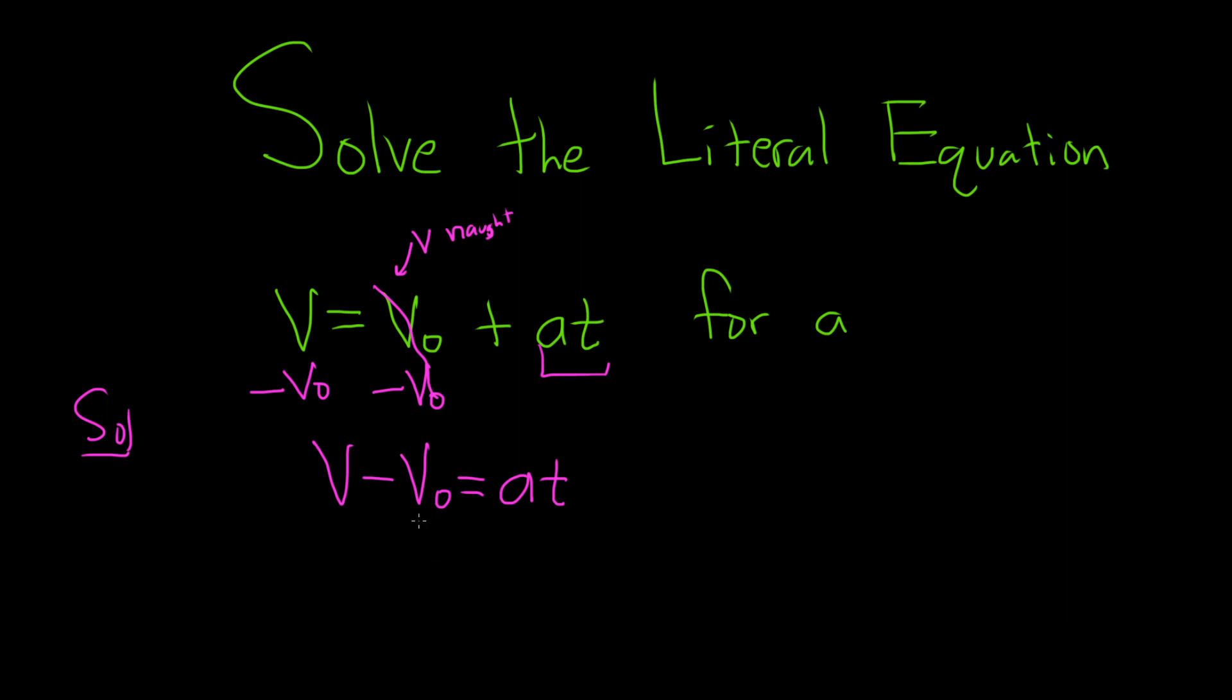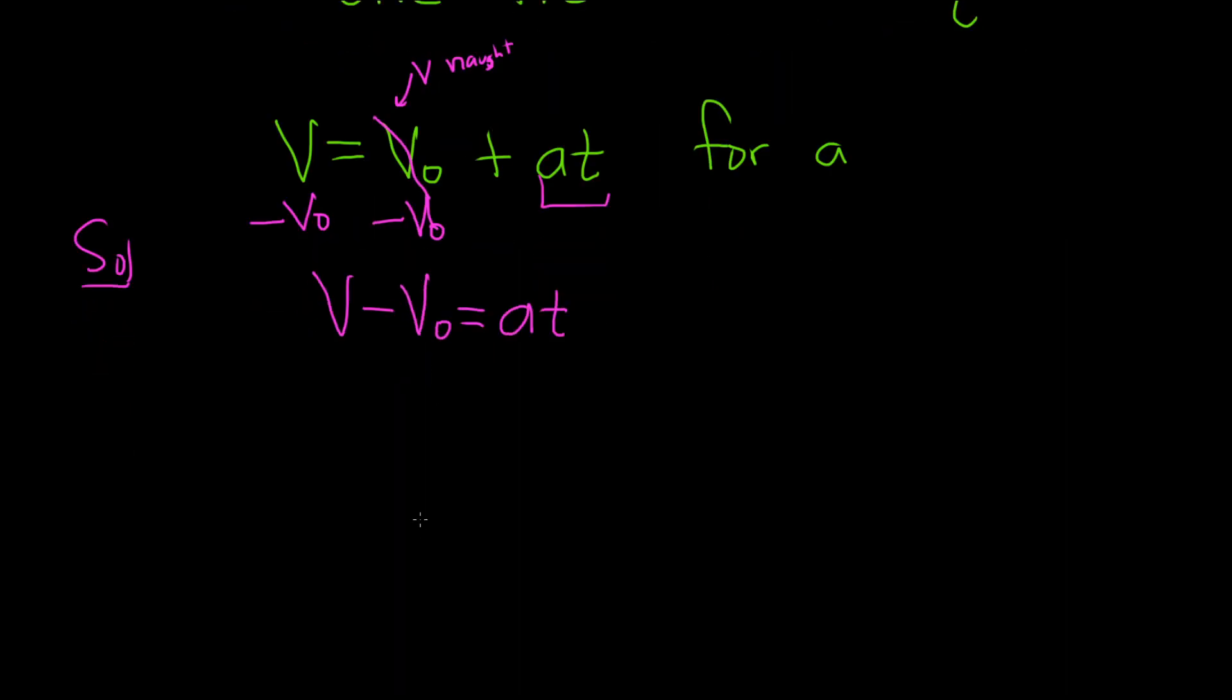Okay, we're almost there. So we're trying to find a. It's being multiplied by t, so to get rid of it, we have to use the inverse operation, division. So we'll divide by t, and then divide both sides, the entire sides.